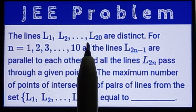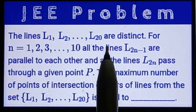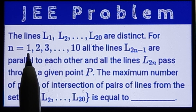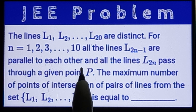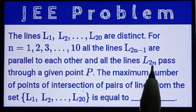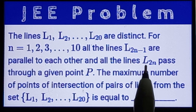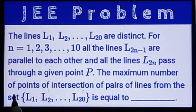So l1, l2, l3, ..., l20 are distinct. For n equal to 1, 2, 3 up to 10, l(2n-1) — that is l1, l3, l5 — these 10 odd-indexed lines are parallel to each other. The remaining lines l2, l4, l6, l8 in the form l(2n) — the 10 even-indexed lines — all pass through a given point P. We need the maximum number of points of intersection of pairs of lines from this set.